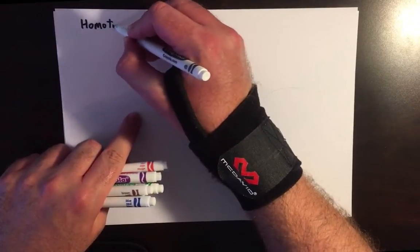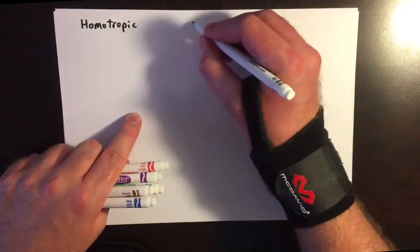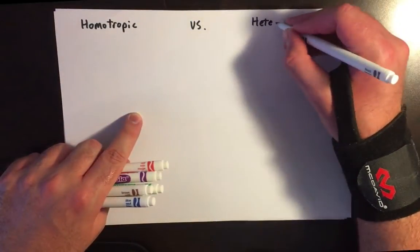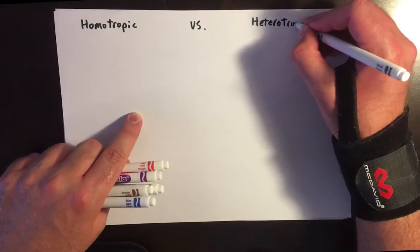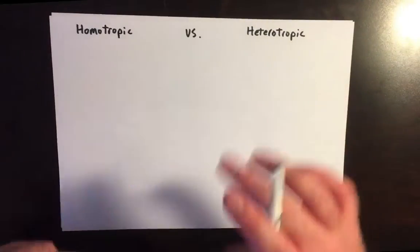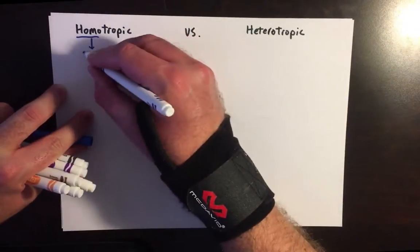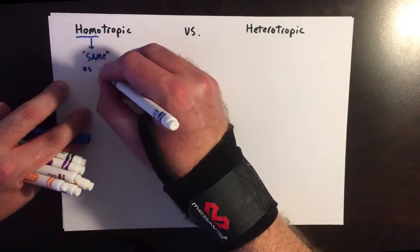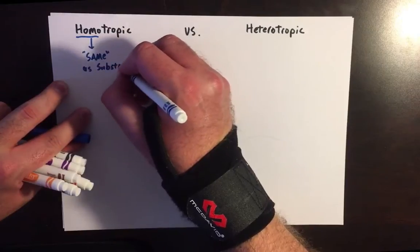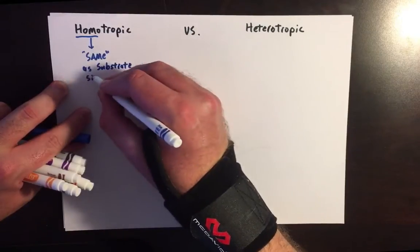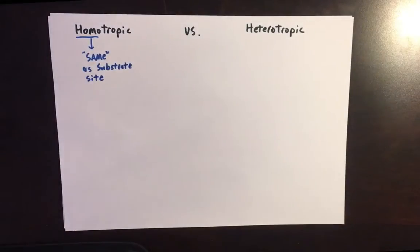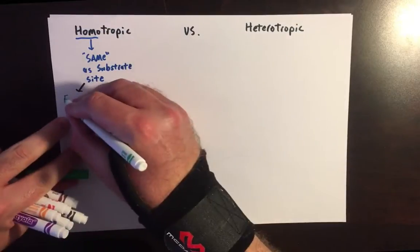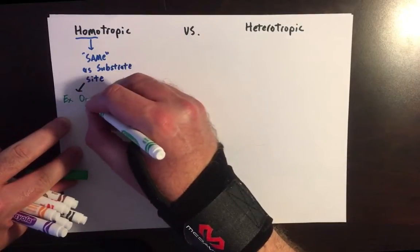Let's talk about the differences between homotrophic and heterotrophic effector molecules in biochemistry, starting with the word origins. Homo means same — in this case, homotrophic effectors are substances that bind to the substrate site. They can sometimes be the substrate itself, or they can be other molecules as well.